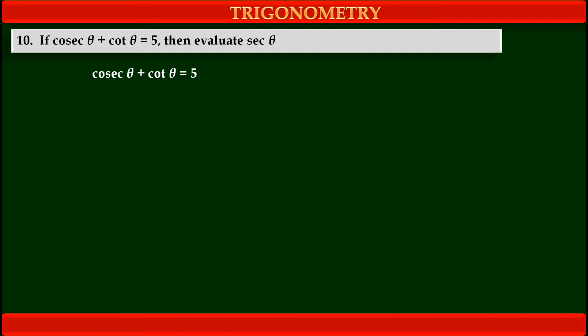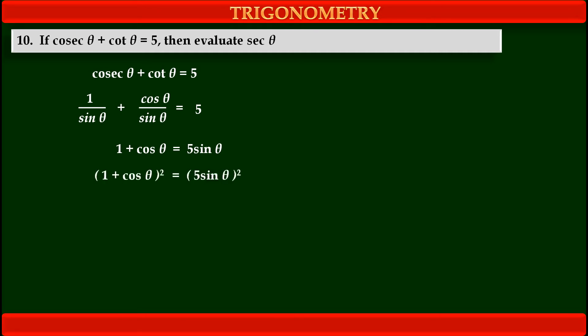So we get cosec θ, that is 1 upon sin θ, plus cot θ, that is cos θ upon sin θ, is equal to 5. Multiplying both sides by sin θ, we get 1 plus cos θ is equal to 5 sin θ. Squaring both sides, we get (1 plus cos θ)² is equal to (5 sin θ)².